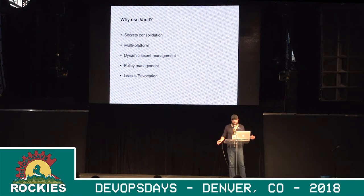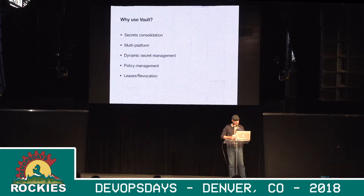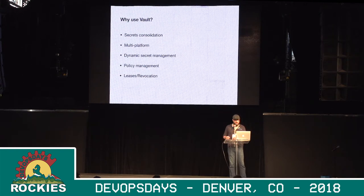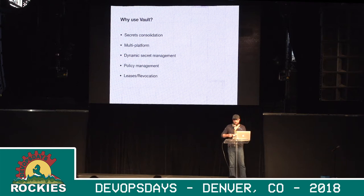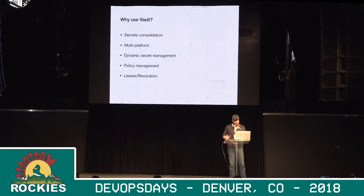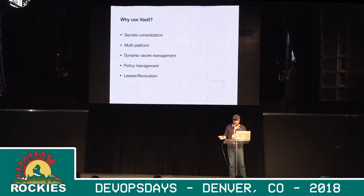So what is Vault? Vault provides secrets consolidation. You can throw in basically any type of secret that you have available — whether it's database secrets, AWS credentials, keys, PEMs, things like that. It can all be thrown into Vault. It's multi-platform, which is why we chose it — AWS, Azure, on-prem. One really cool feature is dynamic secrets management, so you can set up your services to actually auto-rotate those credentials on a TTL. Policy management is another thing Vault provides — accessing those secrets, providing TTLs on those secrets, and setting up time-based access to those secrets.